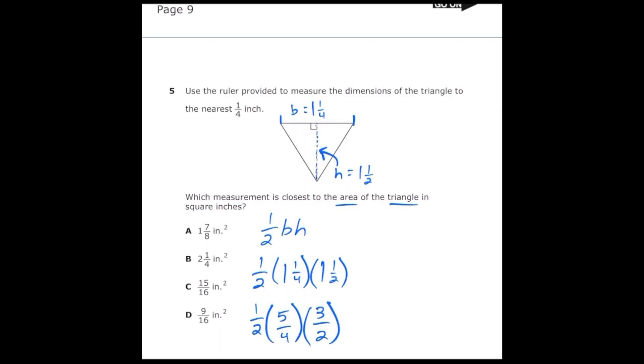Now to multiply, I just have to multiply all the numerators and then all the denominators. That's going to give me 1 times 5 is 5, times 3 is 15, and then 2 times 4 is 8, times 2 is 16. So my answer is going to be 15/16.